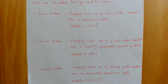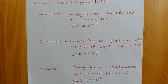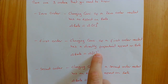The second is first order. For first order reactants, when you change their concentration it has a directly proportional effect on the rate. So if you double the concentration it would double the rate, if you triple it it would triple the rate, if you quadruple it it would quadruple the rate, and if you halve it it would halve the rate.